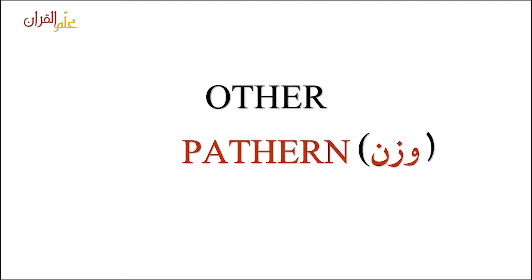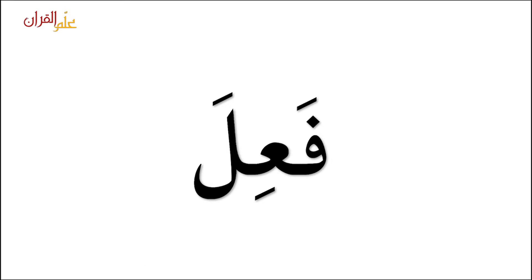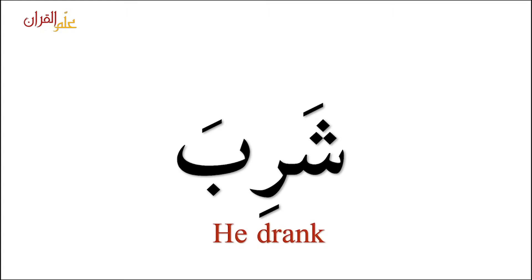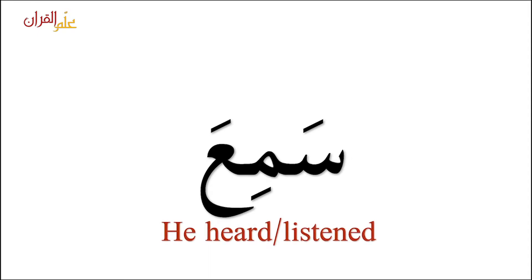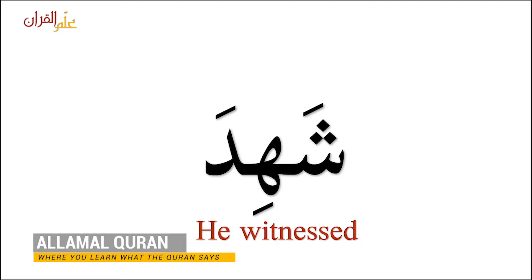There is one more famous pattern or wazn, which is fa'ila. One was fa'ala; this is fa'ila. These two are very common. In fa'ila, the ayn al-kalima or middle letter has kasra or zir. Let's see other verbs on this pattern: shariba — he drank; sami'a — he heard or he listened; alima — he knew or he came to know; shahida — he witnessed.